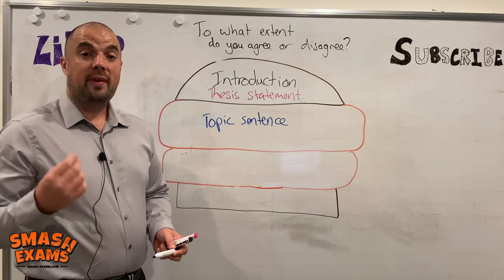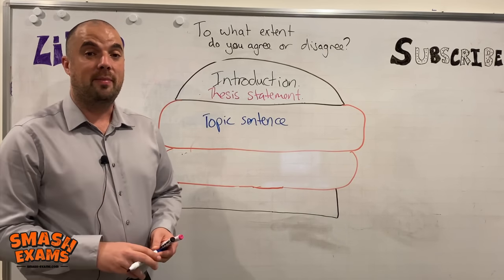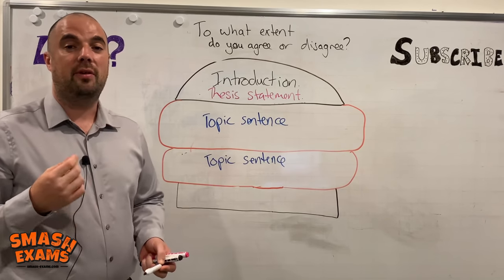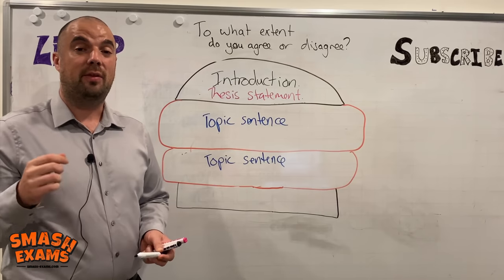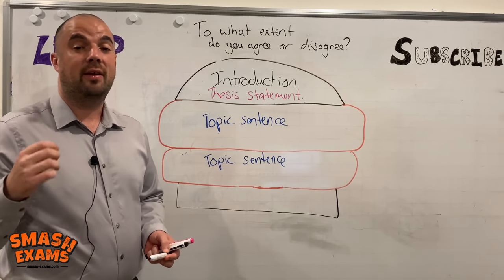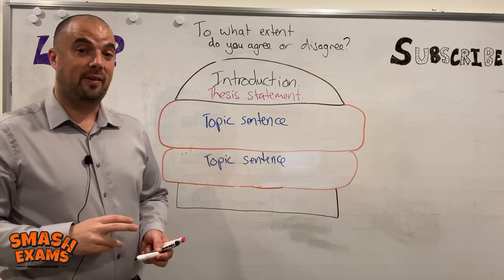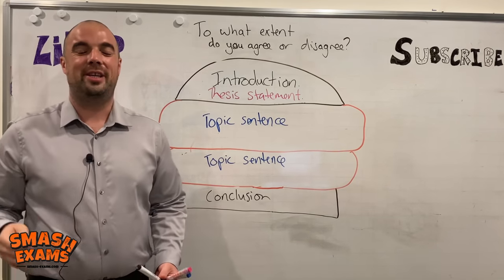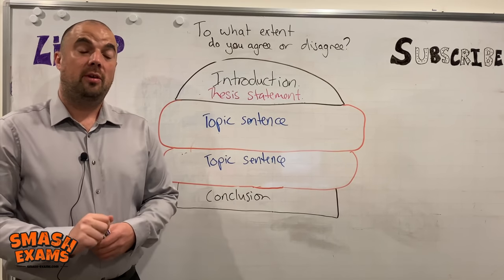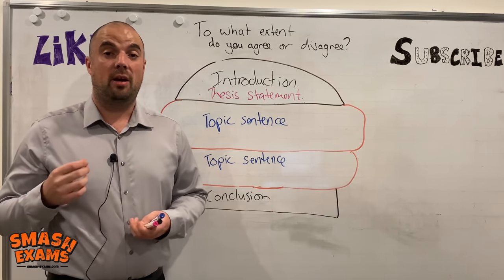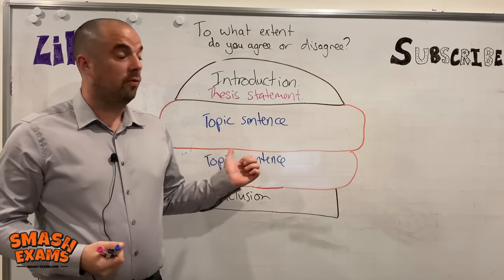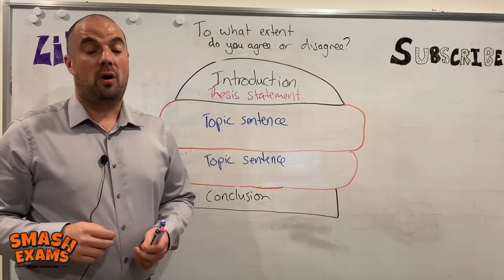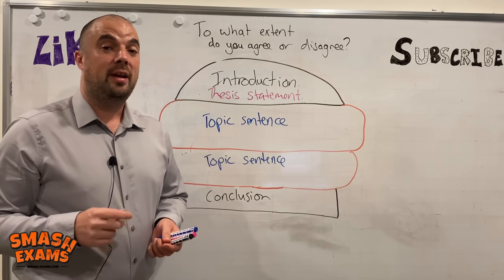The second part of the meat will be the second reason why you agree with the statement. Again, you need a topic sentence and examples and reasons around that topic sentence — things like facts, statistics, things that have happened to you, your experiences. Finally you need to write a conclusion with a concluding statement that sums up whether you agree or disagree and a quick summary of the two reasons you have chosen. That is the burger structure for an agree or disagree essay.